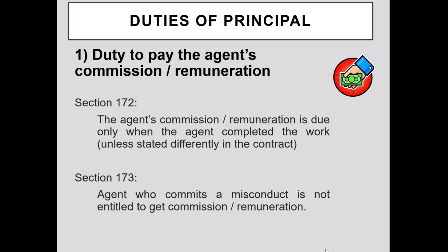For example, if the agent has made a secret profit in the process of carrying out his duties, one of the remedies the principal can exercise is to refuse to pay the agent's commission. Likewise, if the agent has committed any other form of misconduct — disobeying the principal's instructions causing losses, or acting negligently — Section 173 allows the principal to refuse to pay the agent's commission.